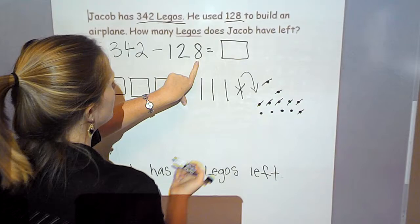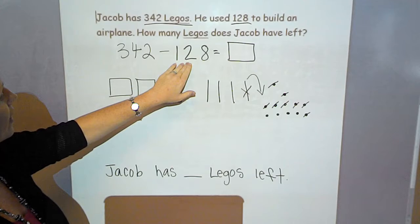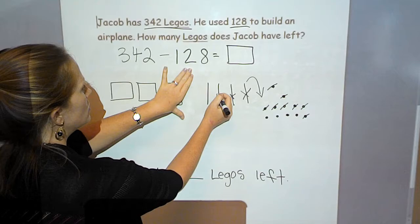So he used 128. I've taken away my eight ones. Now I have to take away my two tens. I have three tens left so I can take away one 10, two tens. And I've got to take away my hundred.